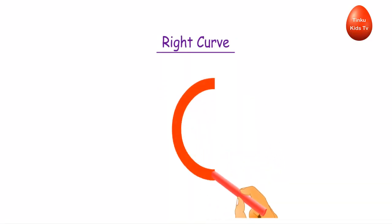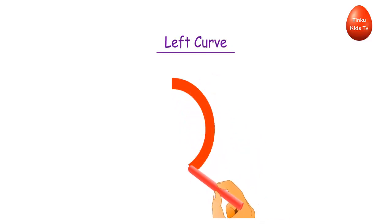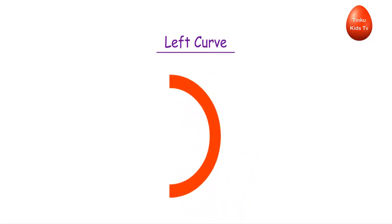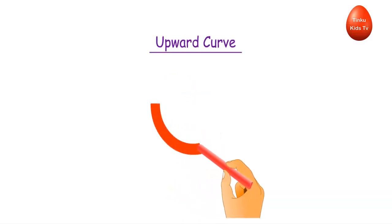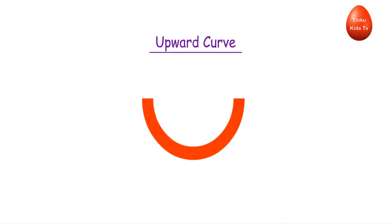Right curve — this is a right curve. Left curve — this is a left curve. Upward curve — this is an upward curve.